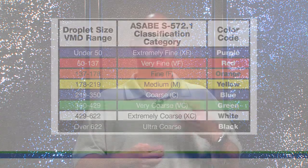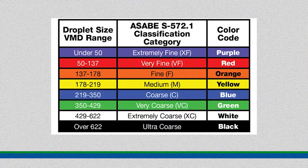Besides numerical descriptions of the droplet spectra, there is also the ASABE Droplet Spectra Classification System. ASABE is the American Society of Agricultural and Biological Engineers, and this classification system simplifies all the droplet measurements into a single classification. The categories are: extremely fine, very fine, fine, medium, coarse, very coarse, extremely coarse, and ultra coarse. Extremely fine represents a very small droplet spectra, whereas ultra coarse represents a very large droplet spectra.